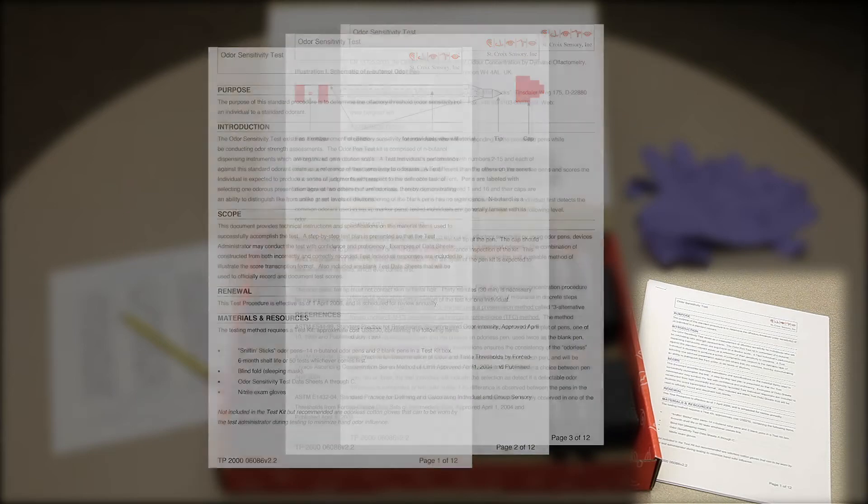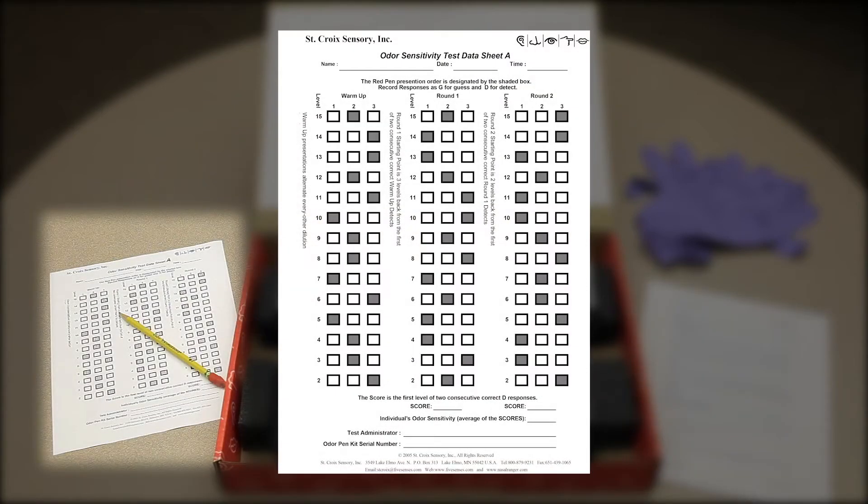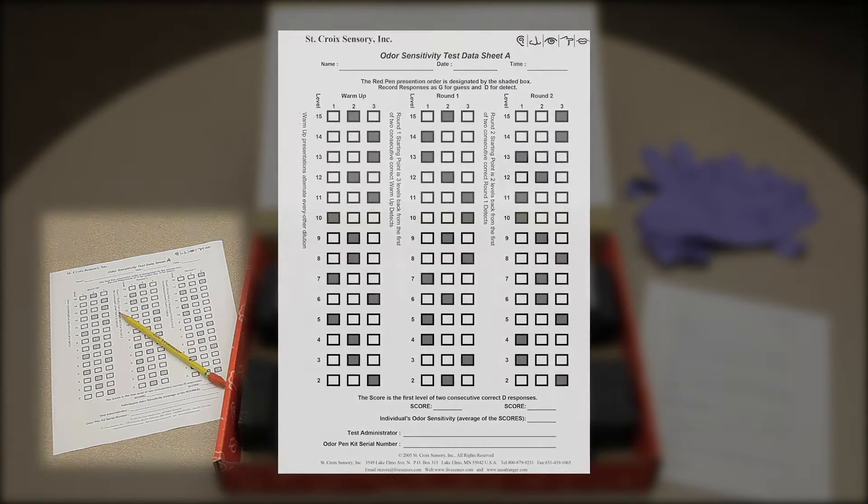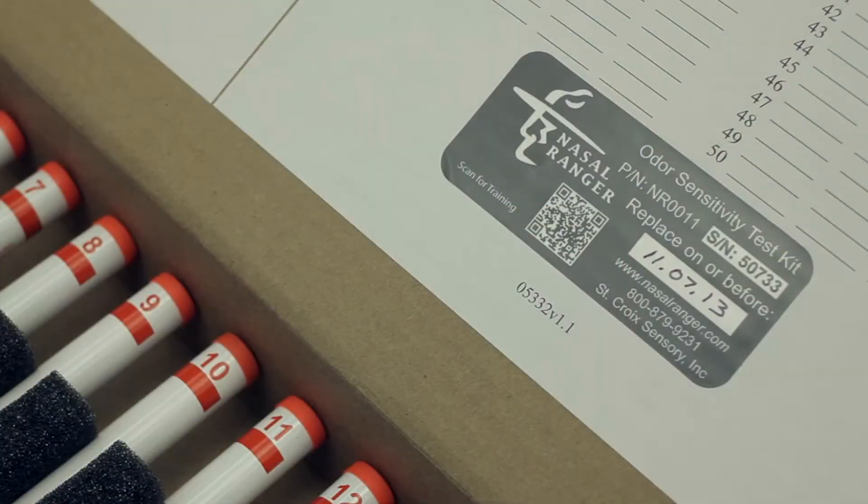The test procedure contains three data sheets, versions A, B, and C with different test sequences, a test record for documenting each test, and finally, the kit serial number with the test expiration date.